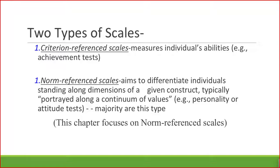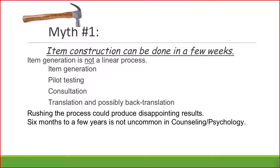Moving into the seven myths of scale construction. The first myth is that item construction can be done in a few weeks. This is not true. Item generation is not a linear process. You are generating items, pilot testing, consulting with experts and multicultural representatives to double-check generalization of your scale. You may also need to translate and back-translate items. Rushing this process could produce disappointing results. It is not uncommon for it to take six months to a few years to develop a strong scale.